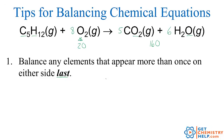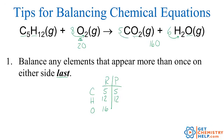So let's just go through and check that out and make sure that's balanced. We had carbon, hydrogen, and oxygen. I had five carbons on the left, five carbons on the right. I had 12 hydrogens on the left, six times two — 12 hydrogens on the product side. I have eight times two, 16 oxygens on the left. I have five times two, that's 10, plus six times one is six — so that's a total of 16 on the product side. So yes, this equation is balanced.